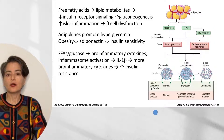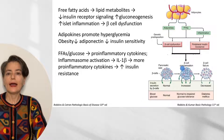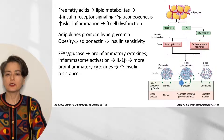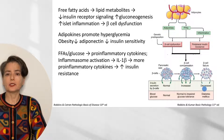We can see early on in type 2 diabetes that the healthy individual has normal insulin secretion and normal blood glucose. As beta cell dysfunction and peripheral insulin resistance develop, there is a compensatory increase in beta cell insulin secretion, with normal to impaired glucose tolerance. But as this progresses, we get beta cell failure, leading to decreased insulin secretion and full-on type 2 diabetes.